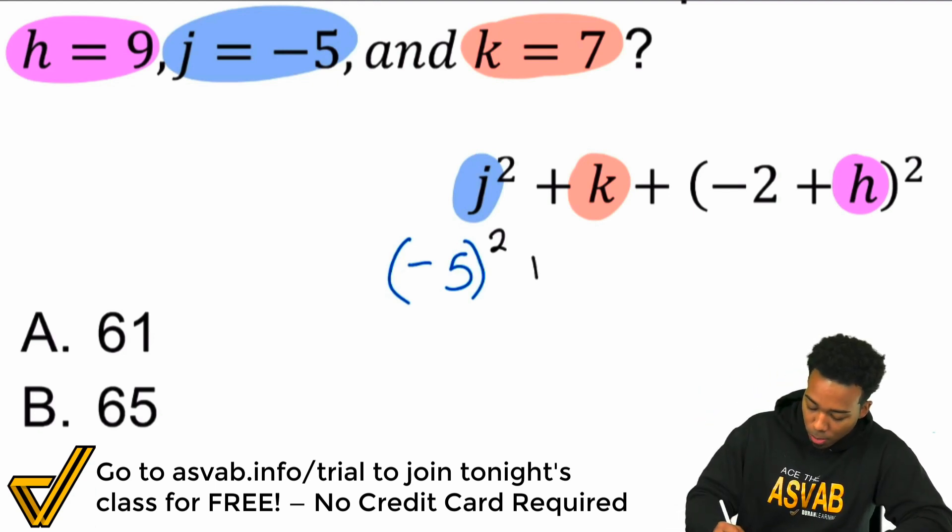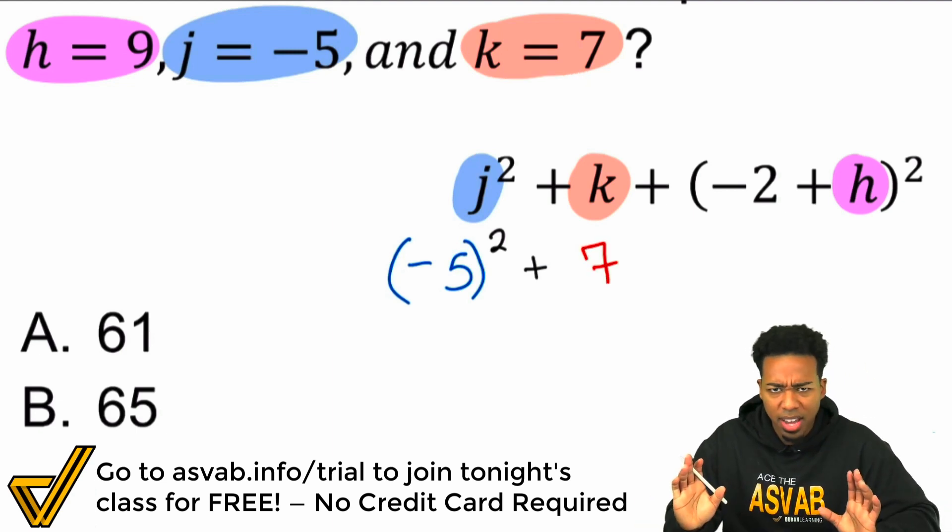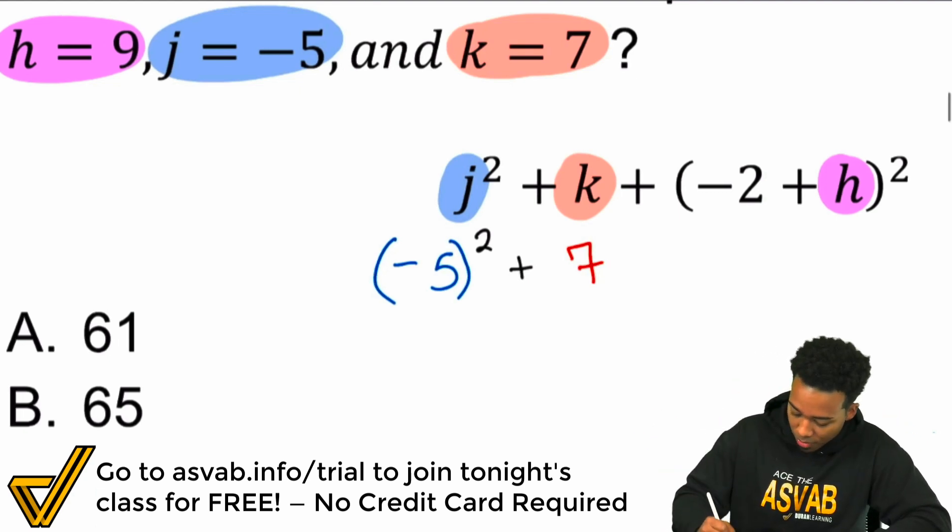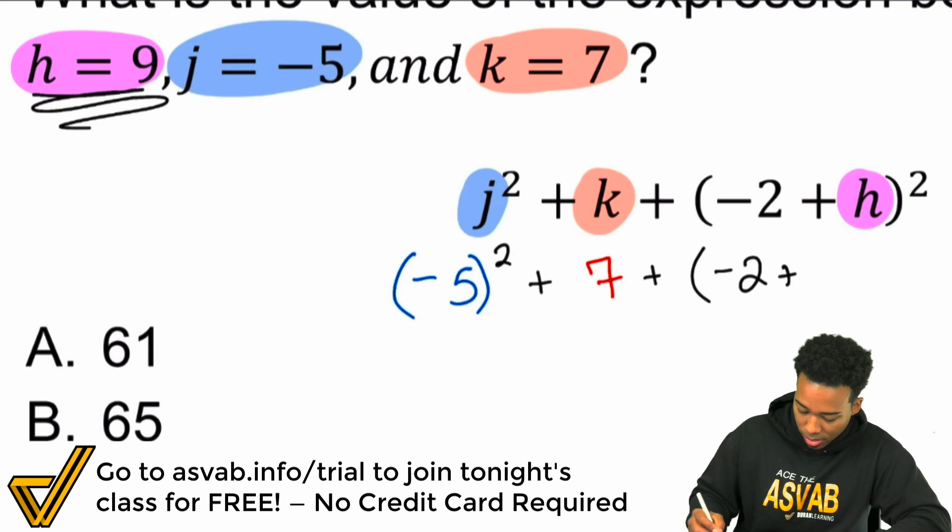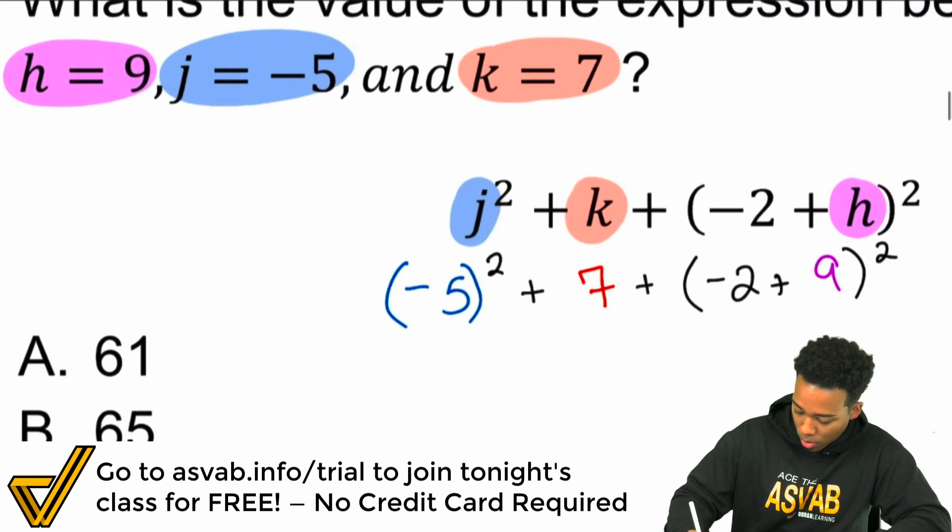So next, we're just going to plug in the rest of our values here. k equals 7. Here we can just write 7 because it's just plus k plus 7. We're fine. But if we move forward here, notice what we have here. Plus negative 2. And then plus whatever h is, which we see here, it's 9. And so we'll plug in 9 right now. And then there, bam, and then we square that. Cool.